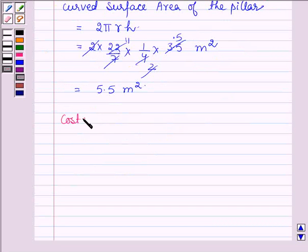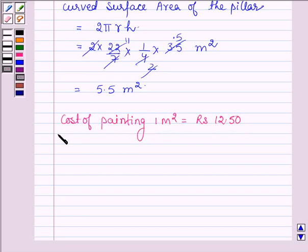Given that the cost of painting 1 m² is Rs. 12.50, the cost of painting 5.5 m² equals Rs. 12.50 × 5.5, which gives Rs. 68.75.